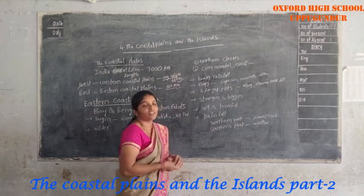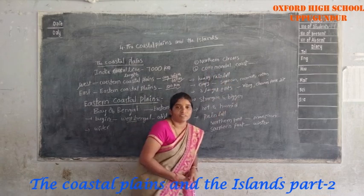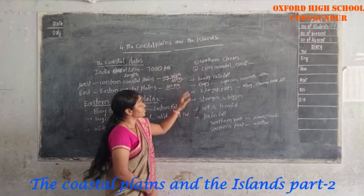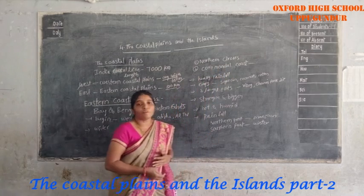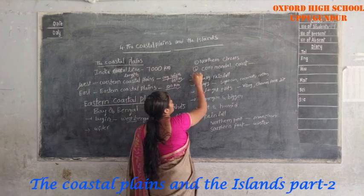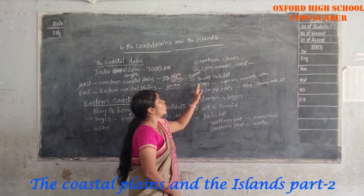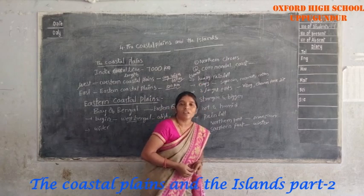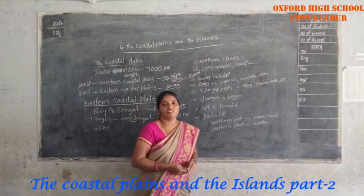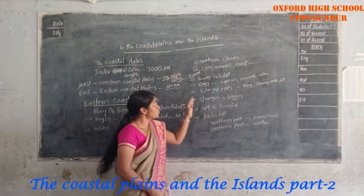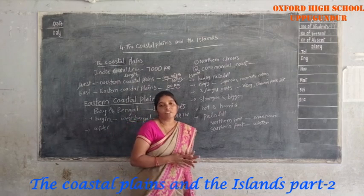The Eastern Coastal Plains are divided into two parts. The northern part is called Northern Circar, and the southern part is called the Coromandel Coast. These are the two parts of the Eastern Coastal Plains.